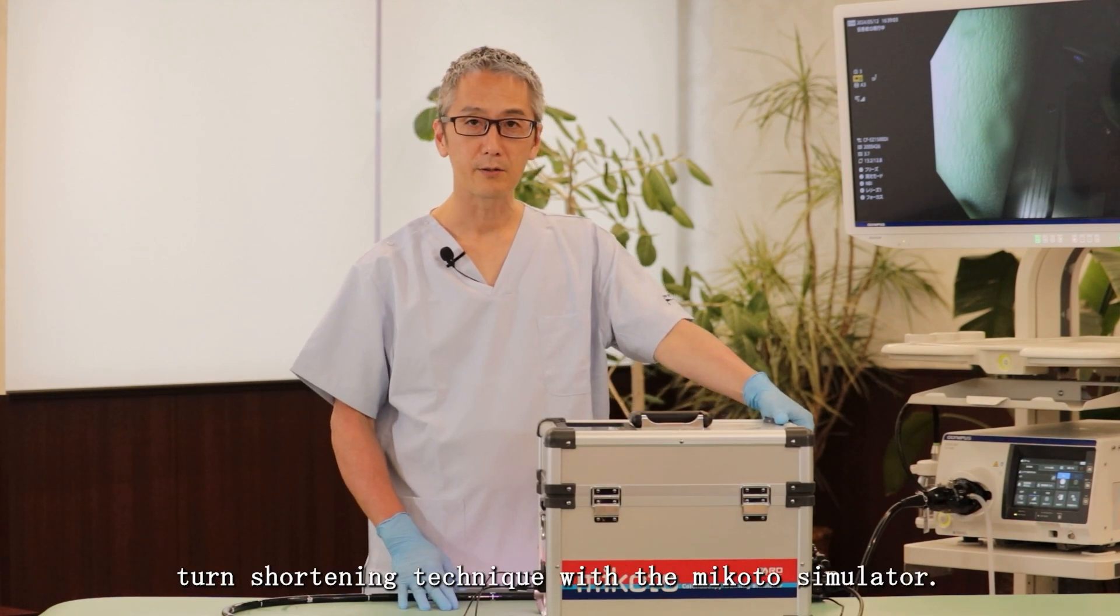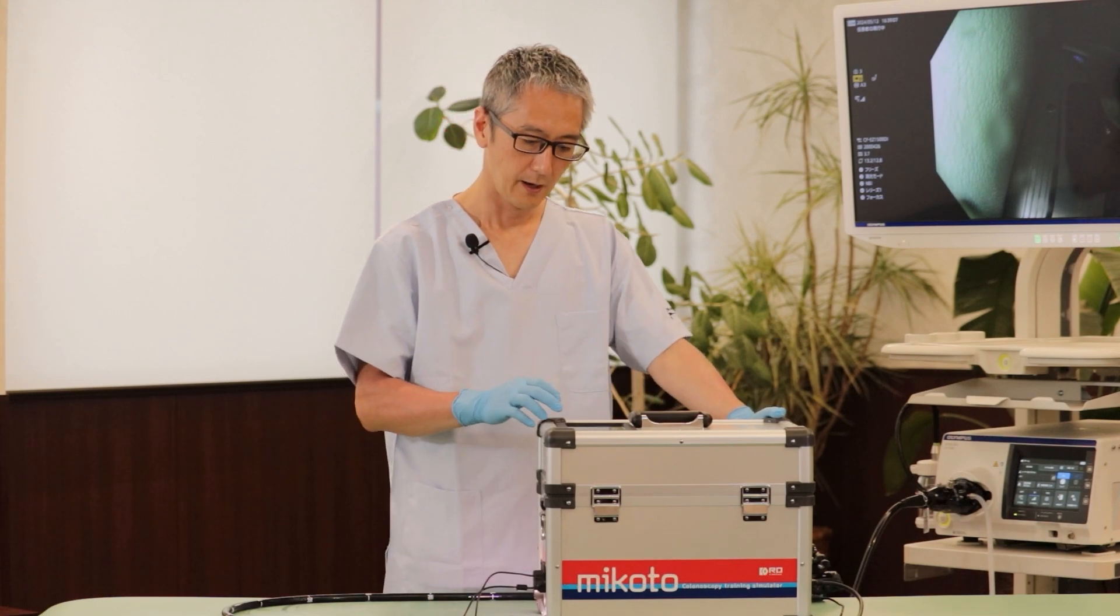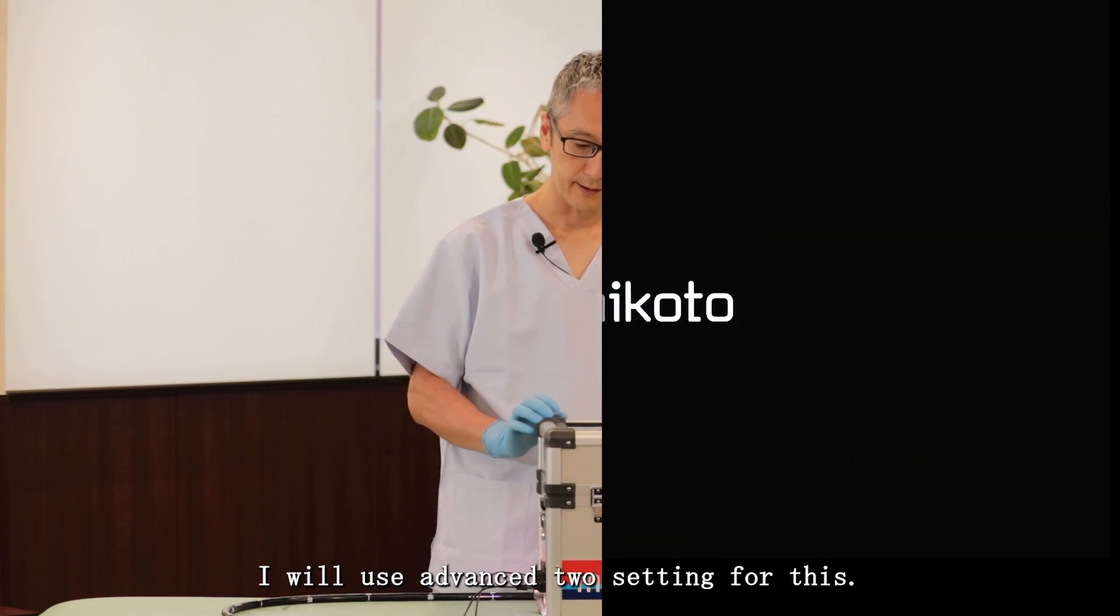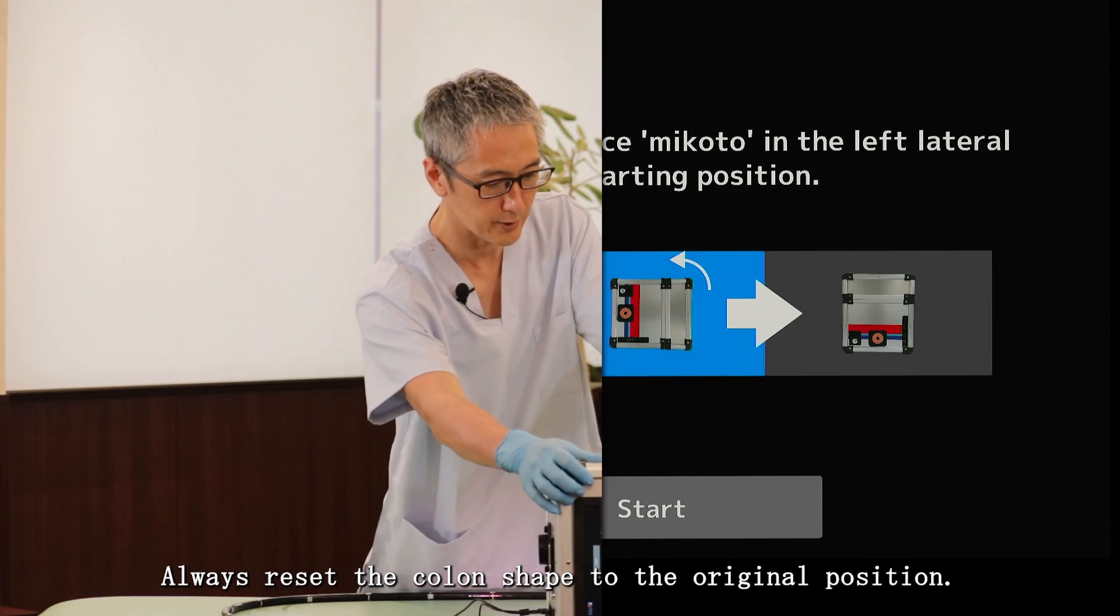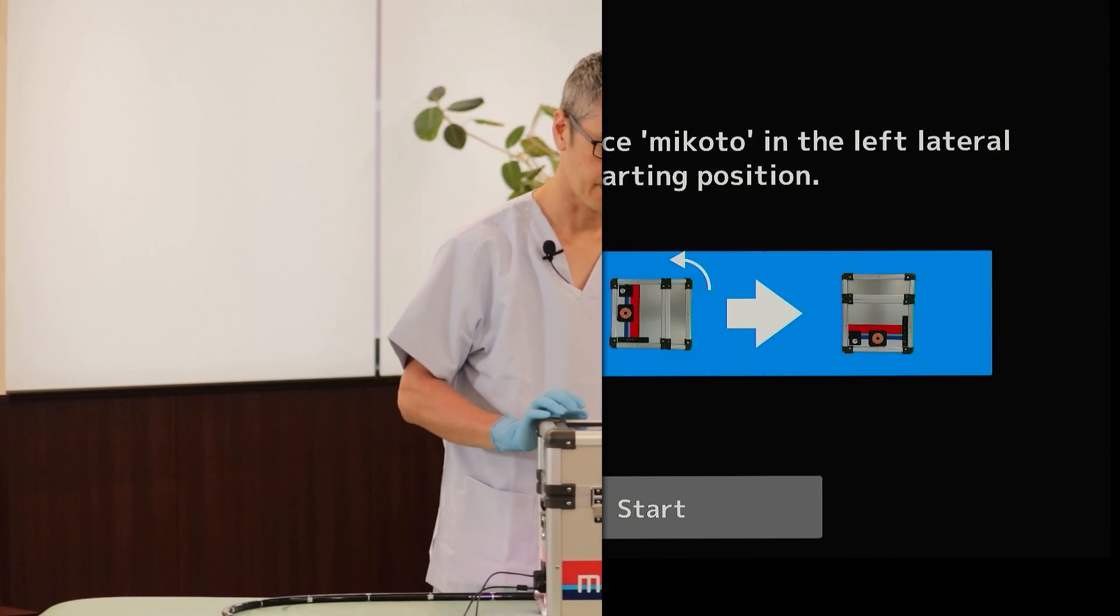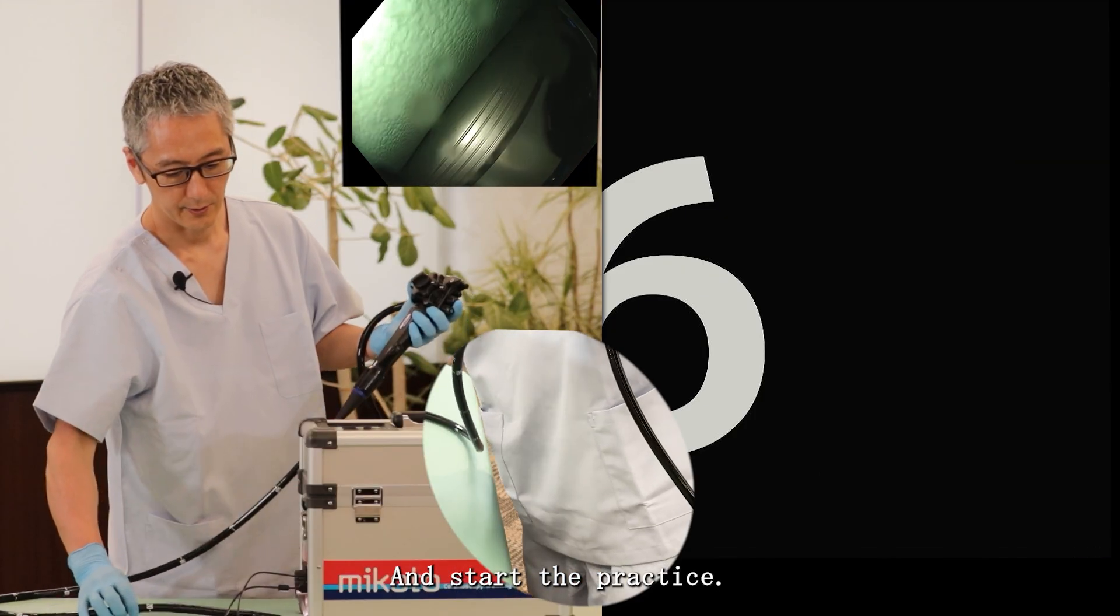Now I will try the right turn shortening technique with the Mikoto simulator. I will use advanced two setting for this. Always reset the colon shape to the original position and start the practice.